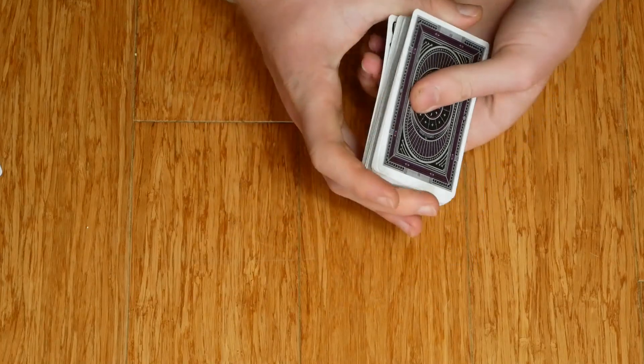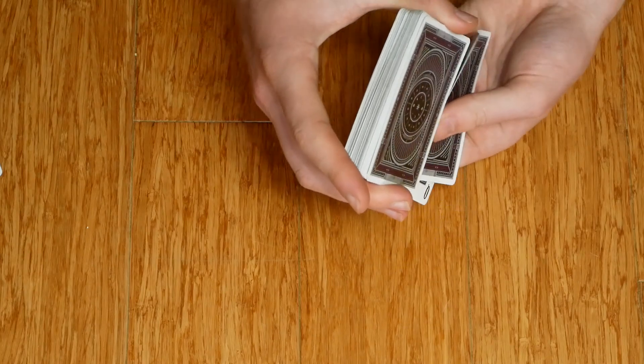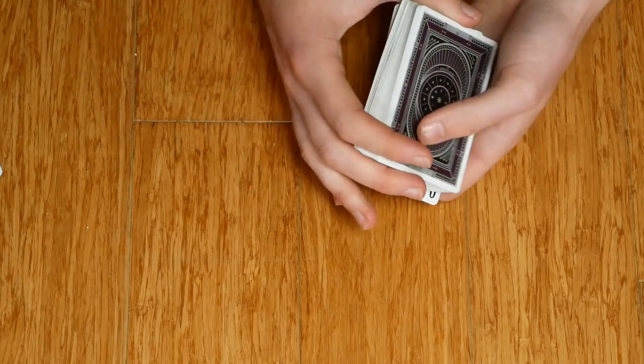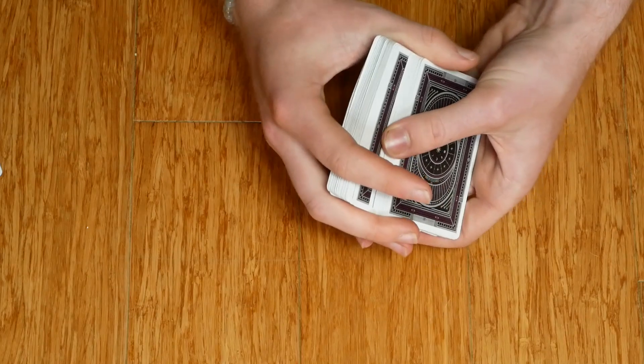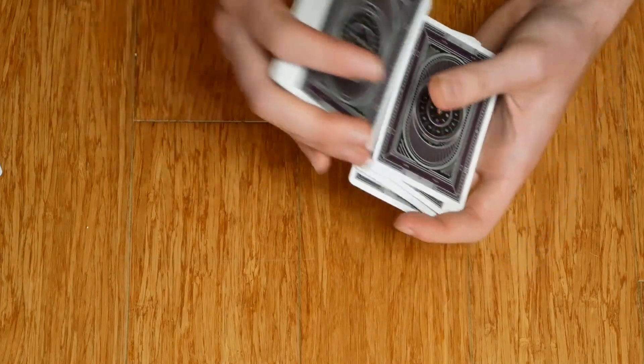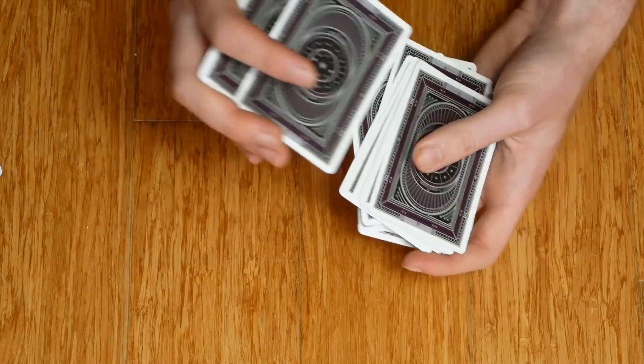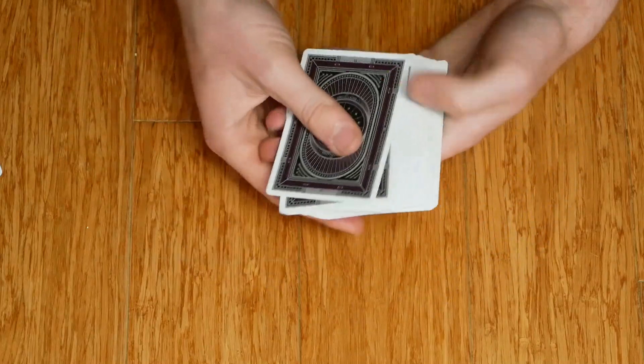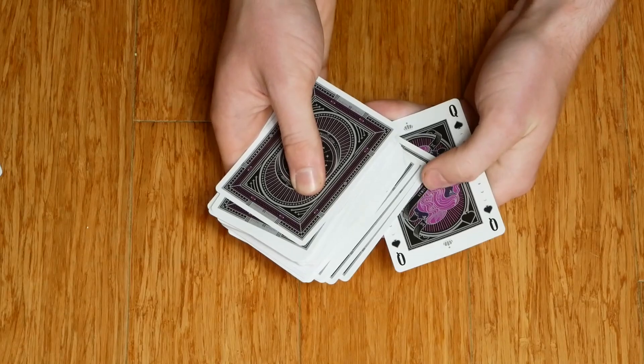Now, what we're going to do is we're going to shuffle the deck a couple more times just to make it more believable. What we're going to do now is we're going to pinch the top and bottom cards so that they stay on the bottom. And then we're going to keep shuffling the deck. This is called bottom control. It's keeping the bottom card on the bottom.